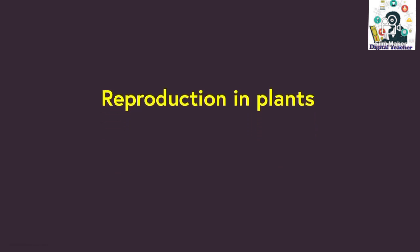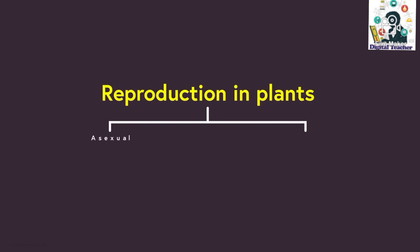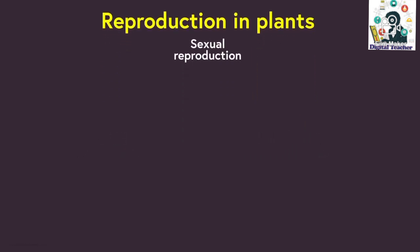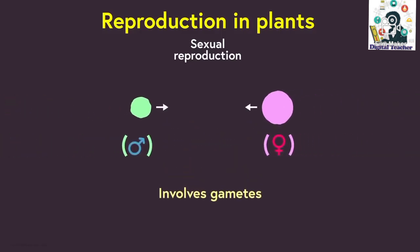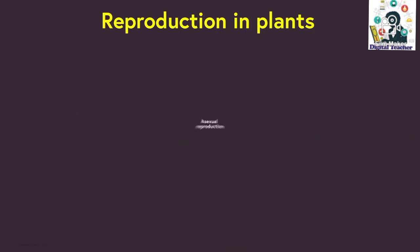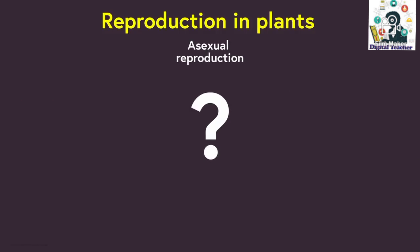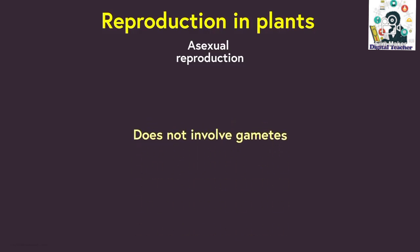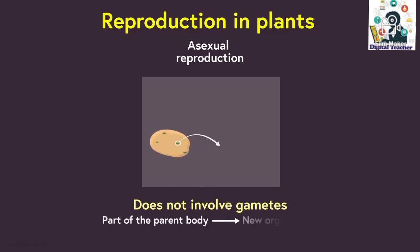Reproduction is divided into two parts, which include sexual reproduction and asexual reproduction. Sexual reproduction involves sex cells or gametes, so a new individual is born when gametes from both male and female parents fuse together. In contrast, asexual reproduction does not involve gametes, so a single parent part can develop into a new plant.